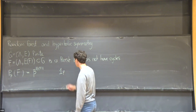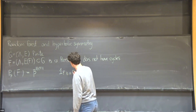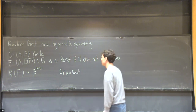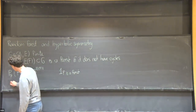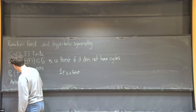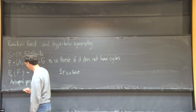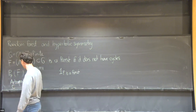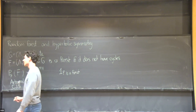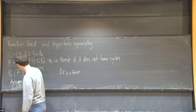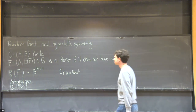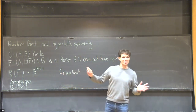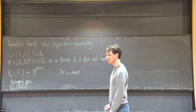So this is the model we're considering, and it goes under various names, but the name we like is the arboreal gas. This term, I think, goes to Caracciolo, Jakobsen, Salera, Sokol, and Sportiello, who used and invented this term. And beta, of course, is a positive parameter.